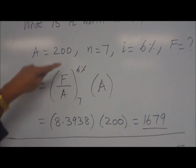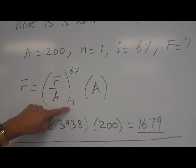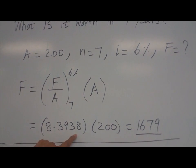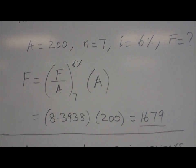But you need the F over A factor. Go back to the table. I equal to six percent. Look under F A column for N equal to seven. You will see 8.3938. So multiply by A, which is given. So you get 1679.